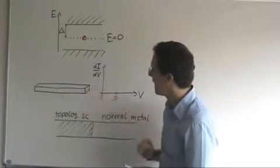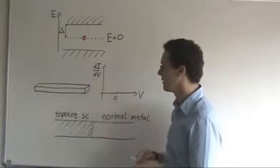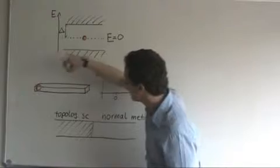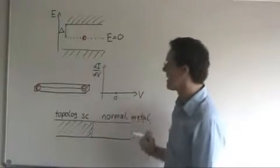Most of the proposals involve a nanowire in proximity to an ordinary superconductor, and the Majoranas then appear as end states in the system.